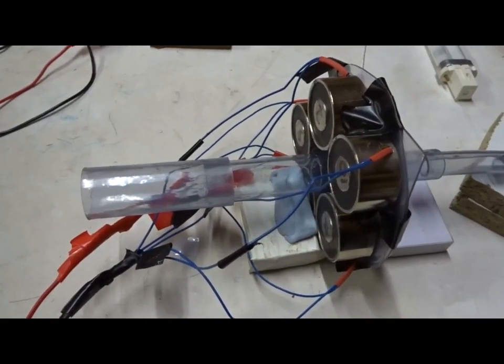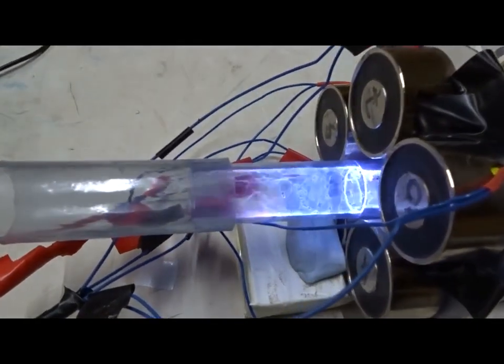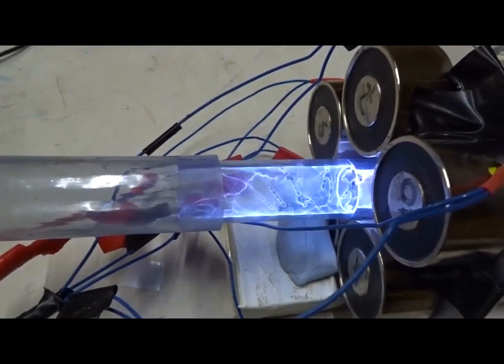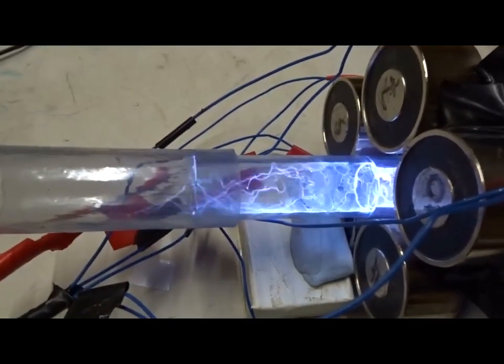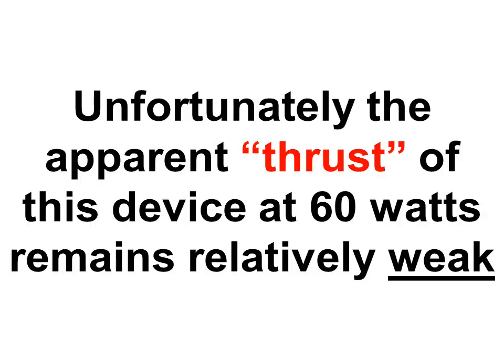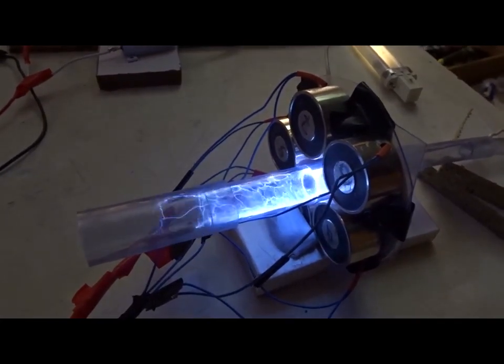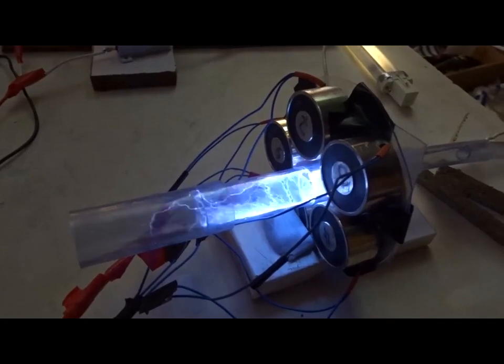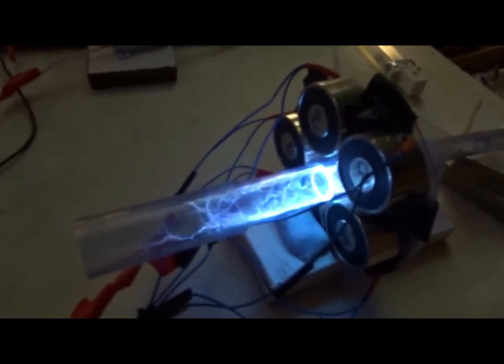Even when there's practically zero flow of argon gas through the tube, look how much thrust we get. 60 watts, one amp going through the coil. The ion rocket.